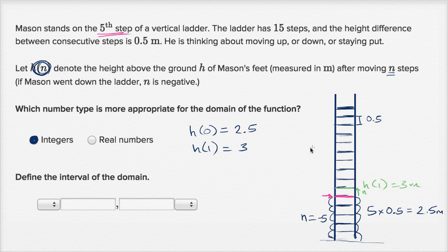And then the highest value for n is if he takes one, two, three, four, five, six, seven, eight, nine, ten steps up. And so that would be n is equal to 10.